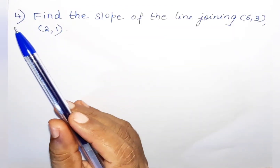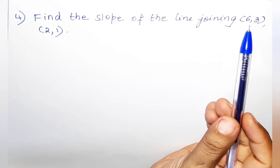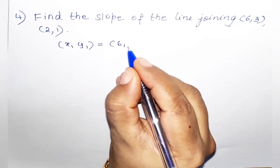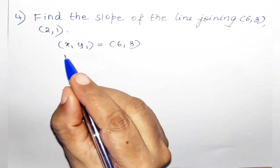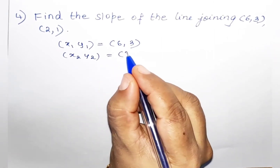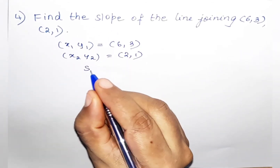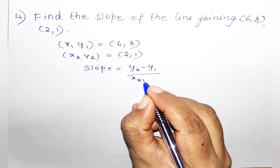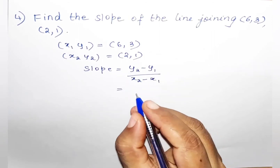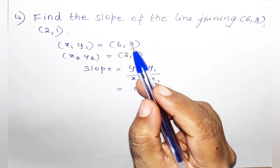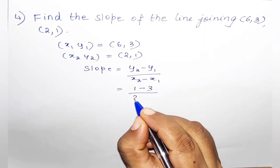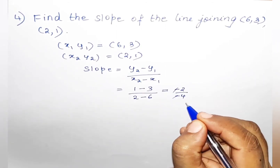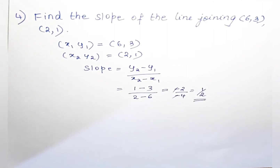Hence we have solved problem 3. Now let us solve problem 4: find the slope of the line joining (6, 3) and (2, 1). Given x1,y1 = (6,3) and x2,y2 = (2,1). Slope = (y2 - y1)/(x2 - x1) = (1-3)/(2-6) = (-2)/(-4) = 1/2.